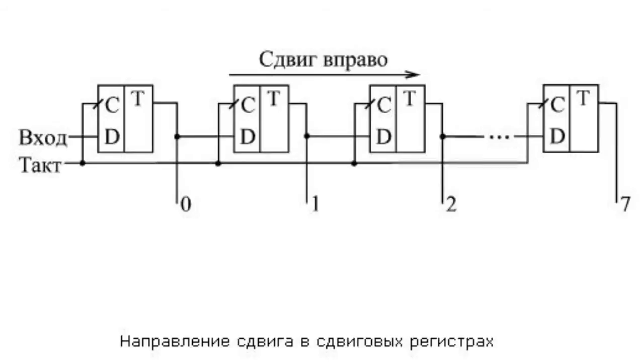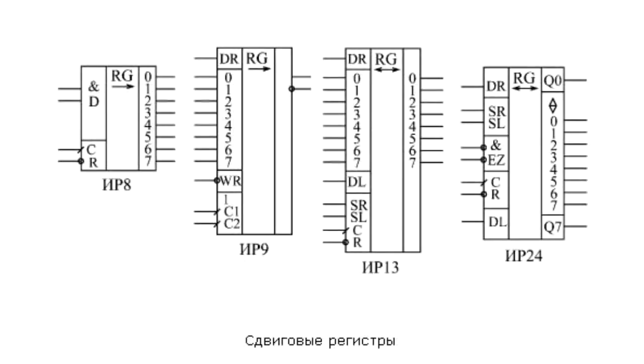Accordingly, the shift of a binary number to the right will be the shift toward lower-order digits, and the shift to the left will be toward higher-order digits.